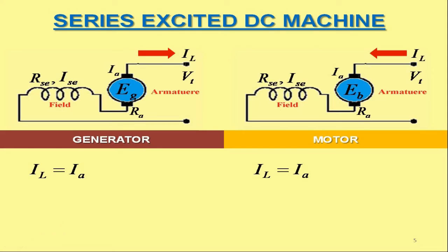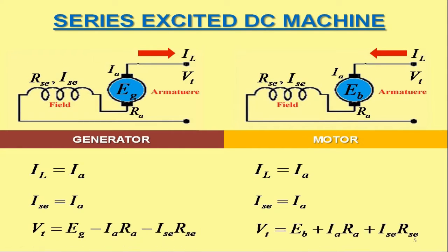The current IL would be identical to the armature current IA for both series excited DC generator as well as series excited DC motor. The series field current ISE would also be identical to the armature current IA for both series excited DC generator as well as series excited DC motor. In case of series excited DC generator, the terminal voltage VT can be calculated by subtracting the armature voltage drop IA·RA together with the voltage drop in series field winding ISE·RSE from the generated EMF EG. In case of series excited DC motor, VT can be calculated by adding IA·RA together with ISE·RSE into the back EMF EB.